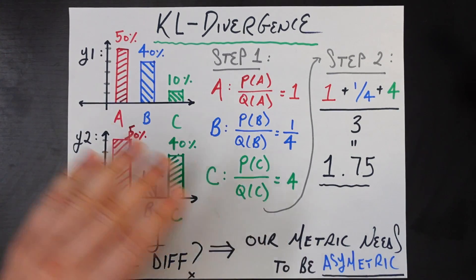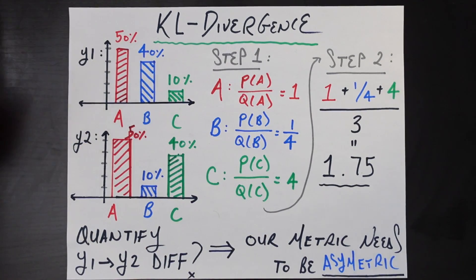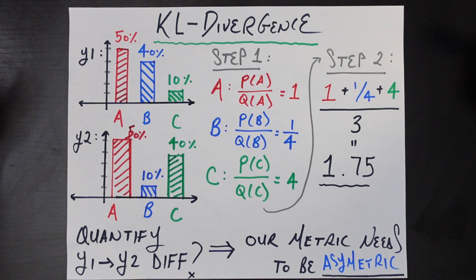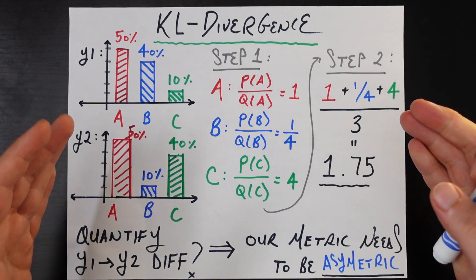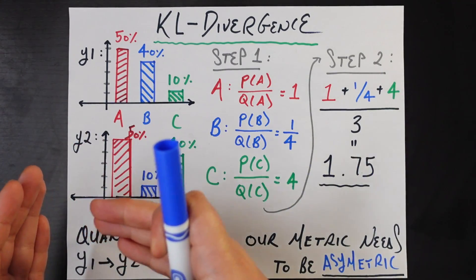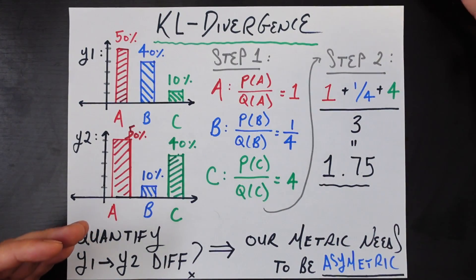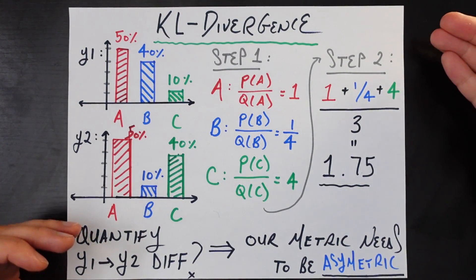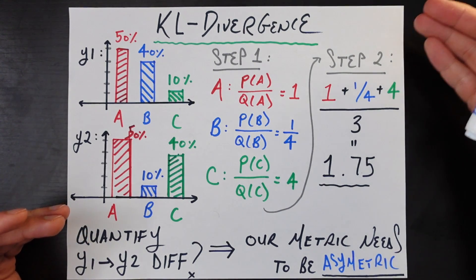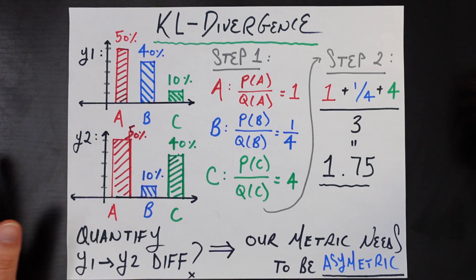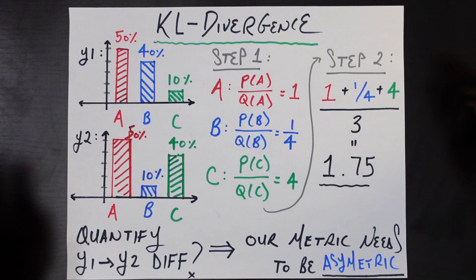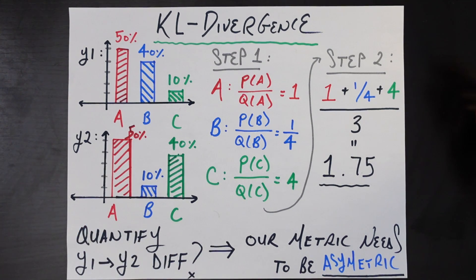Asymmetry can be just as important as symmetry in mathematics. For a simple example, think about percent changes. When measuring the percent change between salaries in Los Angeles versus Chicago, one of those has to be your basis point. If you live in LA you care about how much higher the salary would be if you moved to Chicago, but if you live in Chicago you care about the opposite. Therefore asymmetry can be just as desirable as symmetry, and for the KL divergence we definitely want the final metric to be asymmetric.